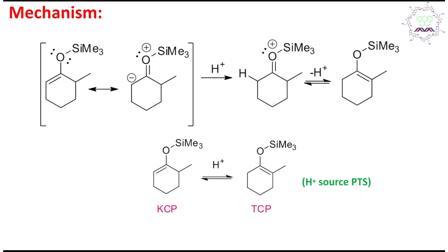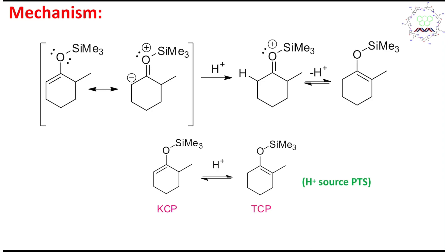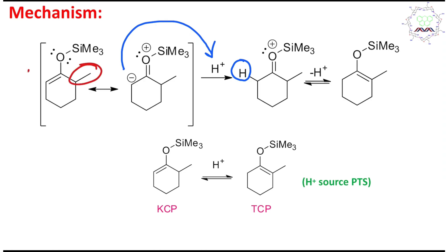Now let us utilize this knowledge to explain what happens if we treat this molecule — this enolate — with acid. From this discussion, you have understood that this center is more electron rich. So what is expected is that this center will abstract the proton. And it will produce this protonated species. This blue proton came in by proton abstraction. Now, this molecule is actually an unsymmetrical enolate — one side is methyl, the other is hydrogen.